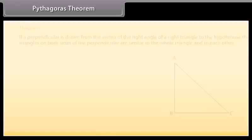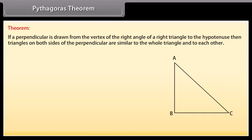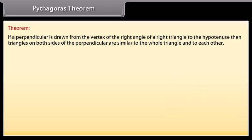Pythagoras theorem. If a perpendicular is drawn from the vertex of the right angle of a right triangle to the hypotenuse, then the triangles on both sides of the perpendicular are similar to the whole triangle and to each other. This theorem is applied to prove the Pythagoras theorem.